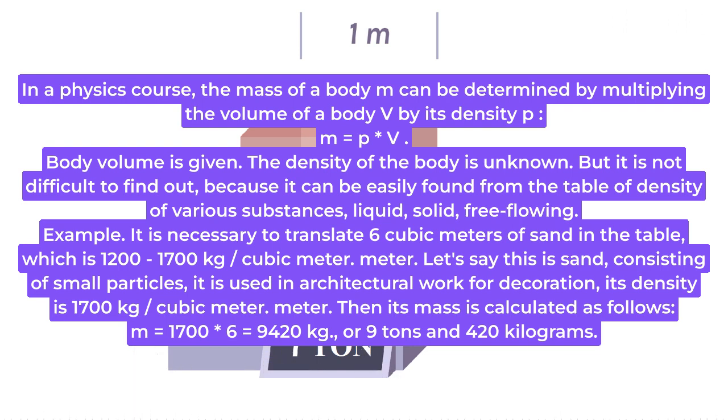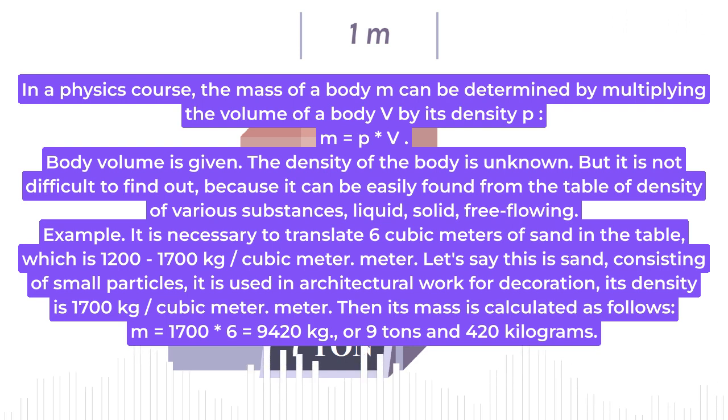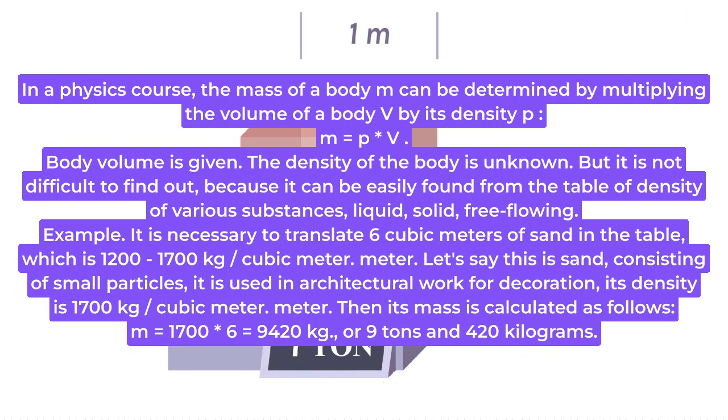Example. It is necessary to translate 6 cubic meters of sand in the table, which is 1200 to 1700 kilograms per cubic meter.